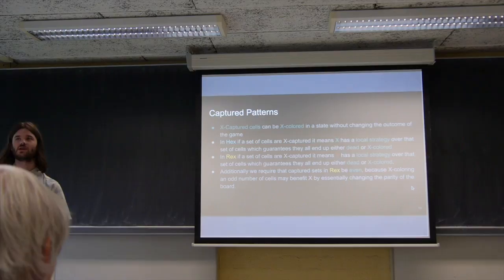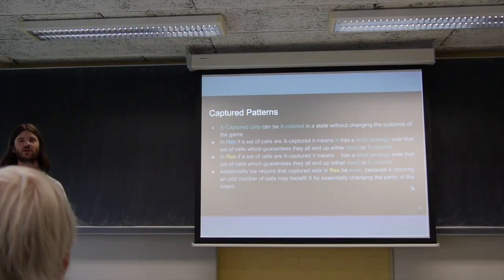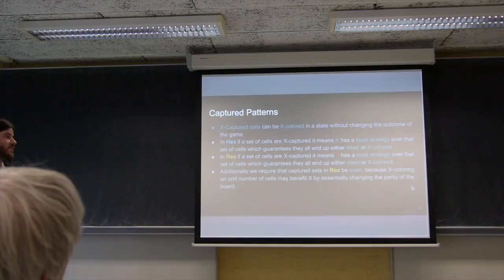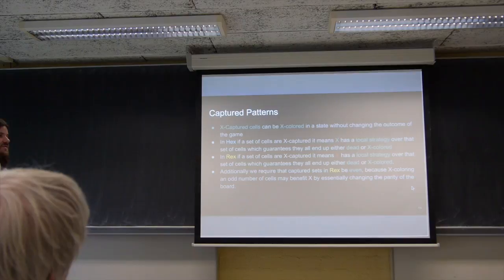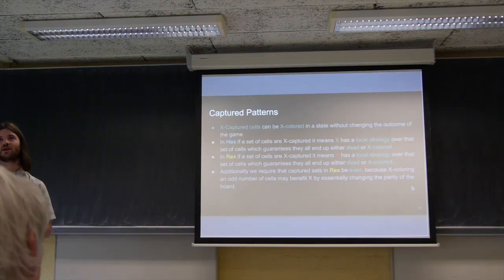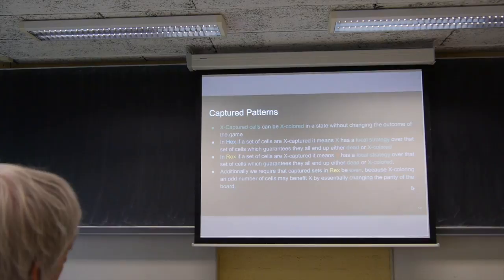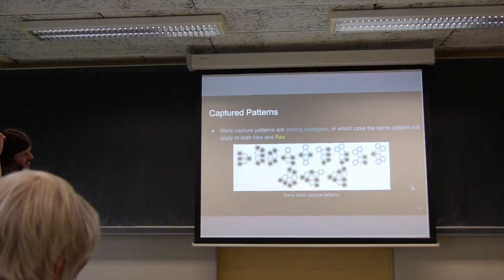Capture patterns is another thing we have. So basically a capture pattern is just any pattern where you can say that the outcome of the game state won't be changed if you color this set of cells for one player or the other. So in hex, this means that one player has a strategy for guaranteeing that every cell in that capture pattern ends up either colored their color or dead, meaning it's useless for the opponent. In rex, it, in a sense, means the opposite, although the notion is very similar. So it means that your opponent has a local strategy over this set of cells that guarantees each of the cells end up your color or dead. And then additionally in rex, we require that the captured sets be even because filling in an odd set of cells can actually benefit you, as we saw previously. But an even number of cells are guaranteed to hurt you. So there's many capture patterns. We just use a similar mechanism to the dead cells. So local patterns that are matching and then we find sets like that.